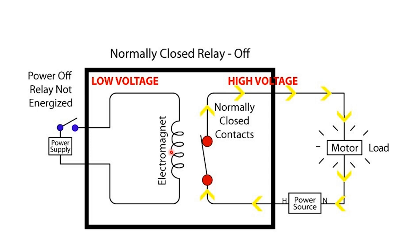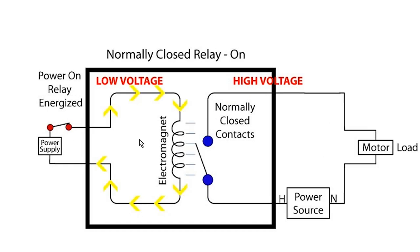When we apply energy to the coil, it opens the contacts, shutting off power to the contact side of the relay. Remember with a single throw relay, we have the option between a normally open or normally closed relay.